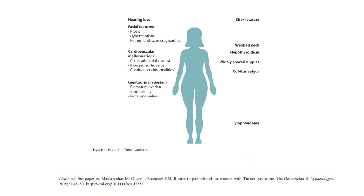Okay, next we move on to the features of Turner's syndrome. So you've got hearing loss, facial features like ptosis, hypertelorism, retrognathia and micrognathia, cardiovascular malformations like coarctation of the aorta, bicuspid aortic valve, conduction abnormalities, genitourinary symptoms, so premature ovarian insufficiency, renal anomalies, you've got lymphedema, you've got cubitus valgus, widely spaced nipples, hypothyroidism, webbed neck, and short stature.